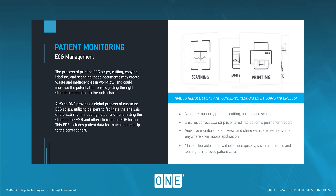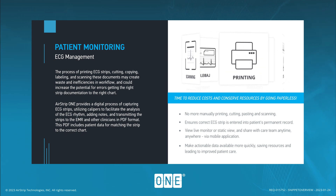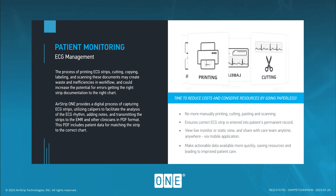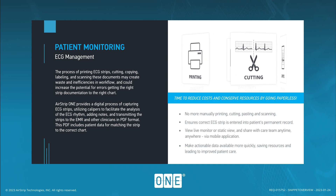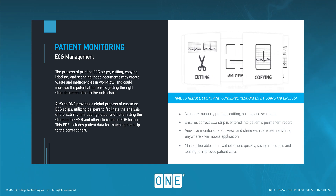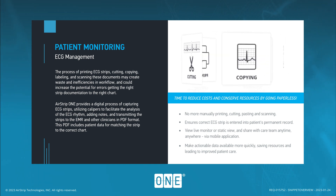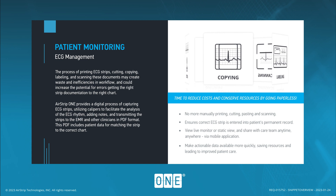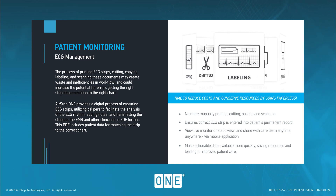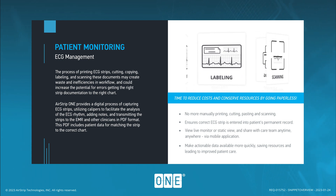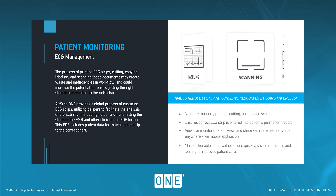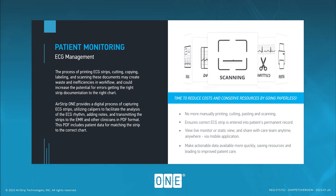Airstrip1 provides a digital process of capturing ECG strips, utilizing calipers to facilitate the analysis of the ECG rhythm, adding notes, and transmitting the strips to the EMR and other clinicians in PDF format. This PDF includes patient data for matching the strip to the correct chart.